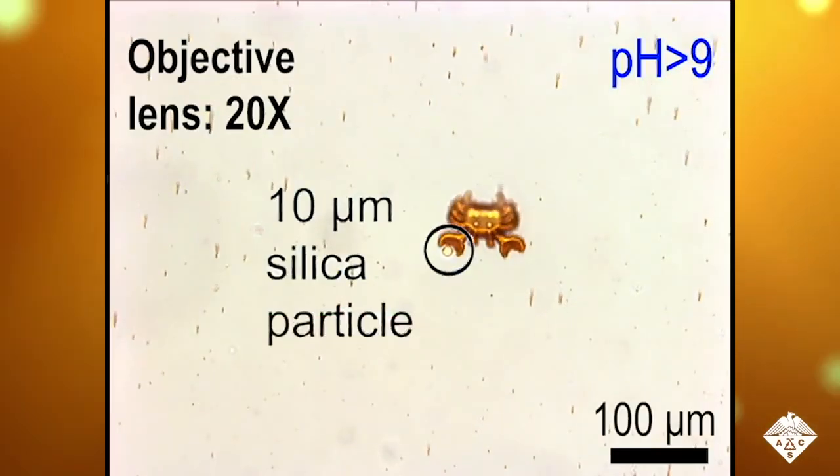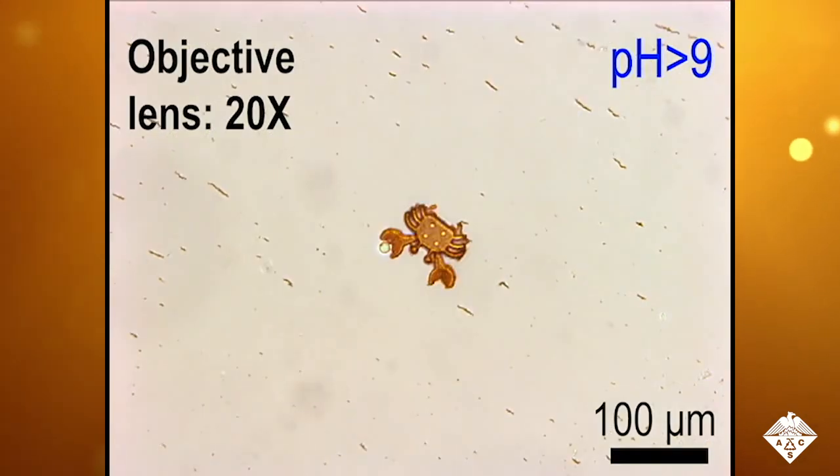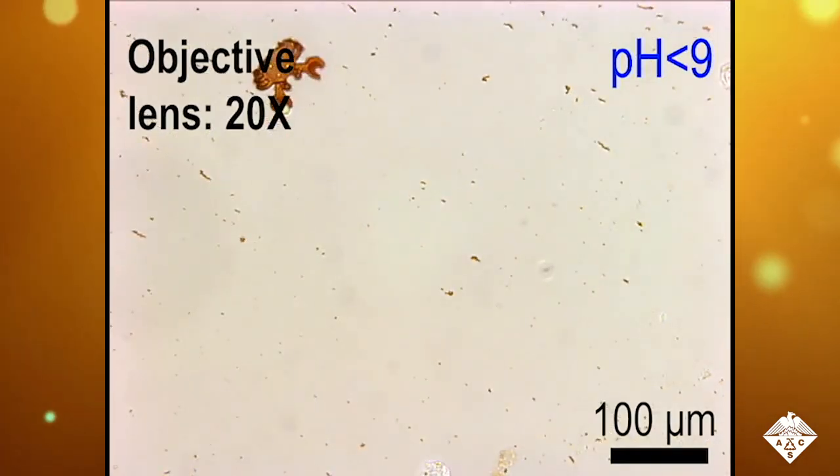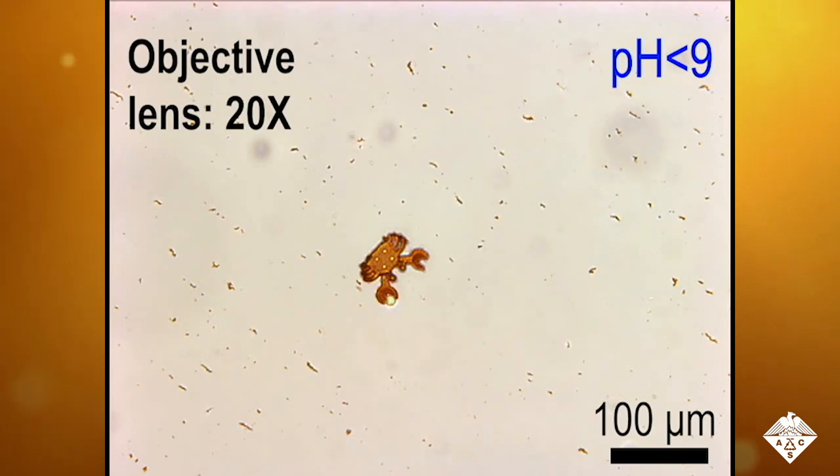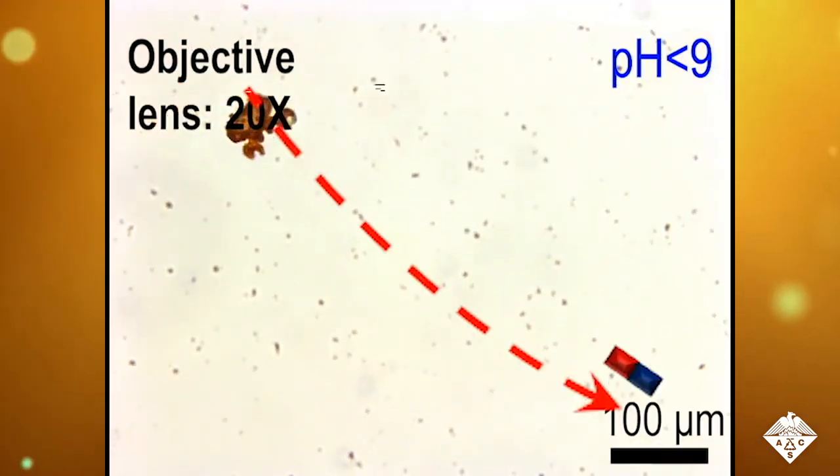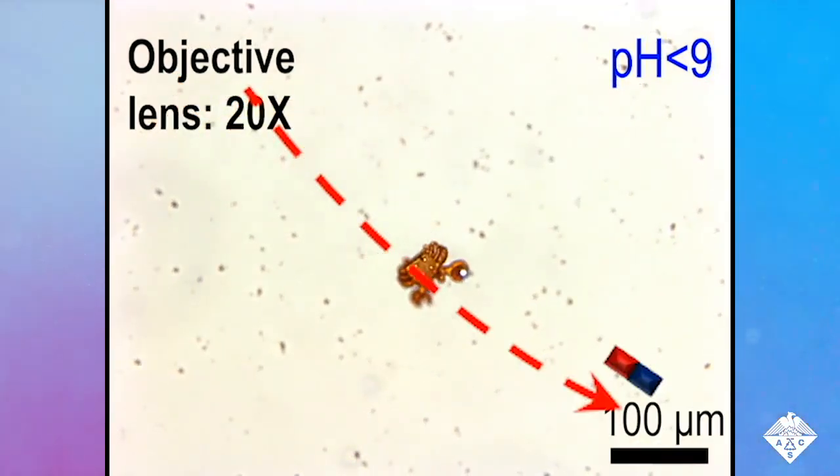The researchers used magnets and pH changes to make the micro robots perform different tasks. For example, the crab gripped a microparticle, transported it, and released it.